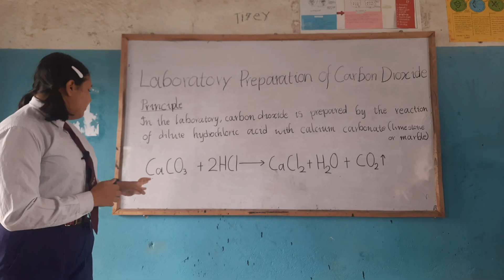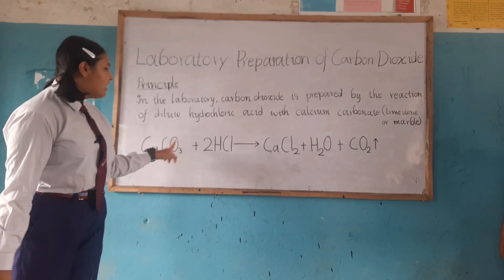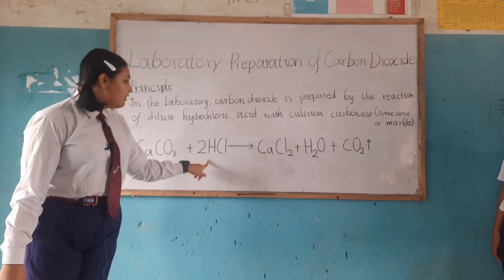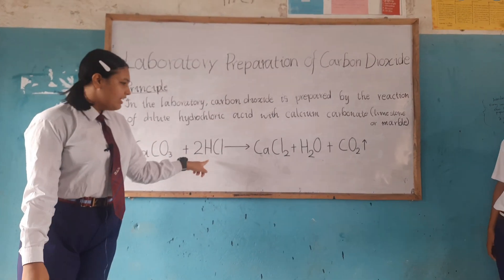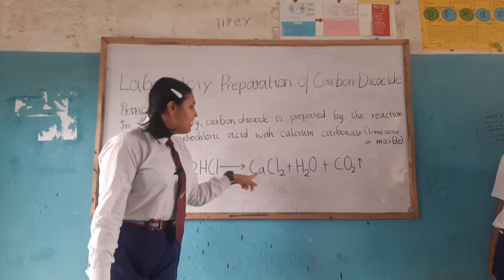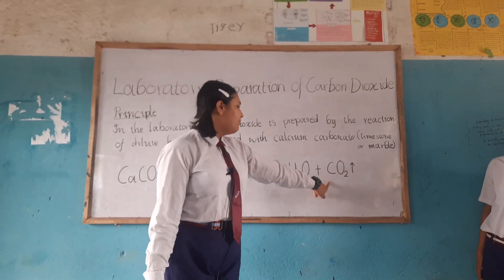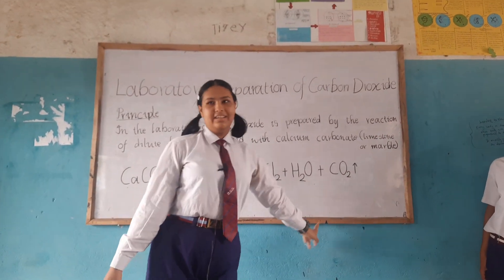While making laboratory carbon dioxide, we will first need calcium carbonate, dilute hydrochloric acid, calcium chloride, and water — and of course, carbon dioxide is the product.